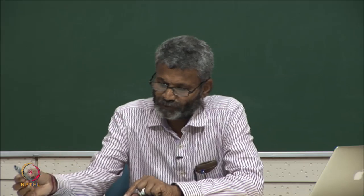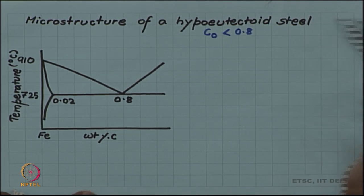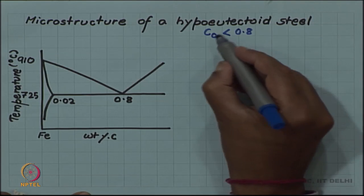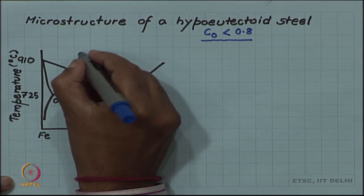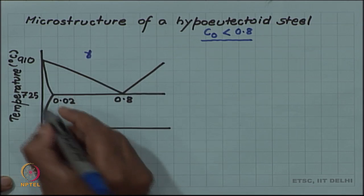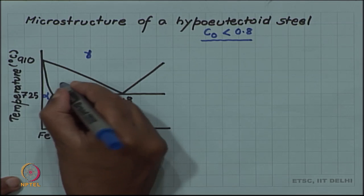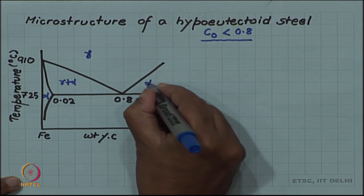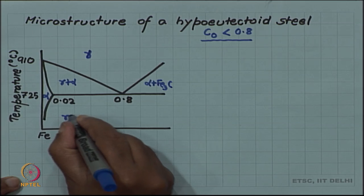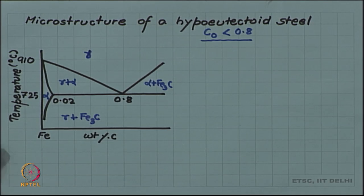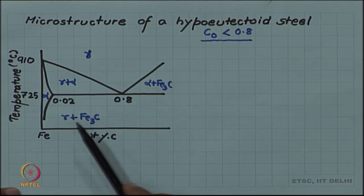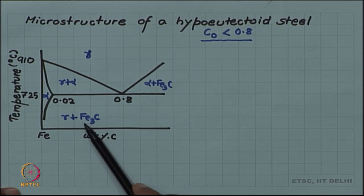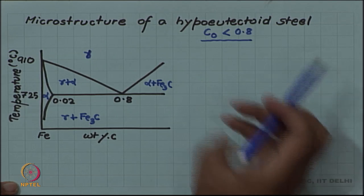We saw in the last video the microstructure of a eutectoid steel. Now let us look at the microstructure of a hypoeutectoid steel. A hypoeutectoid steel, if you remember, is a steel with less than the eutectoid composition, which is 0.8 weight percent carbon. The phases in our diagram are austenite (gamma), ferrite (alpha), and the two-phase regions: gamma plus alpha, alpha plus Fe3C, and gamma plus Fe3C.